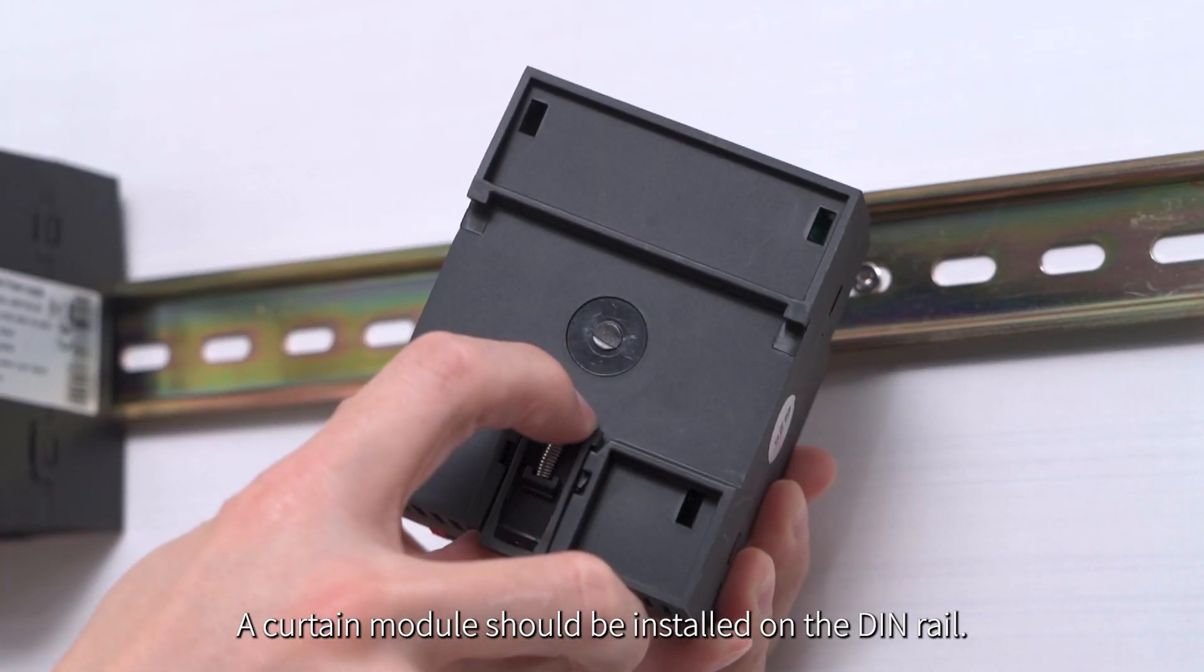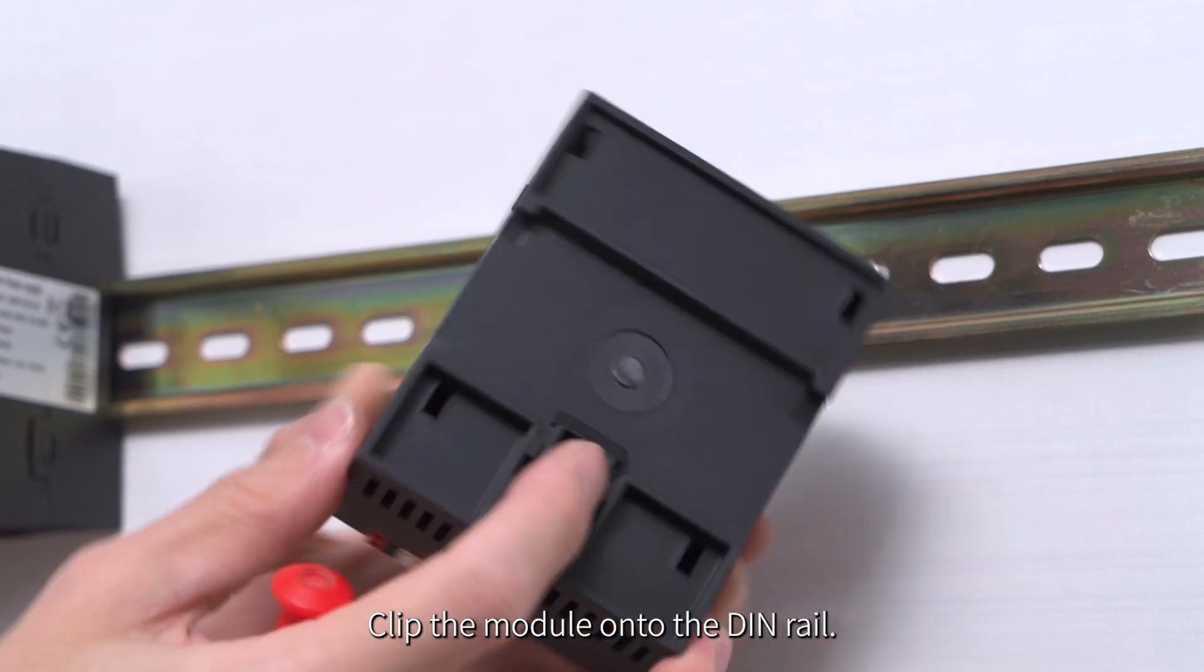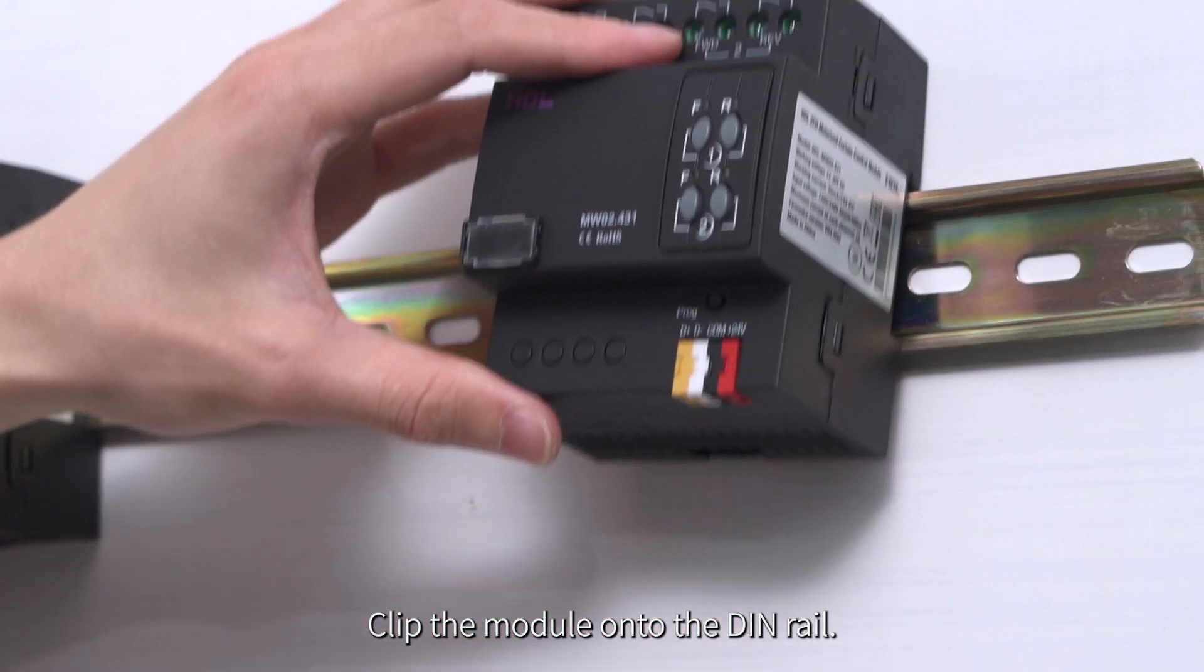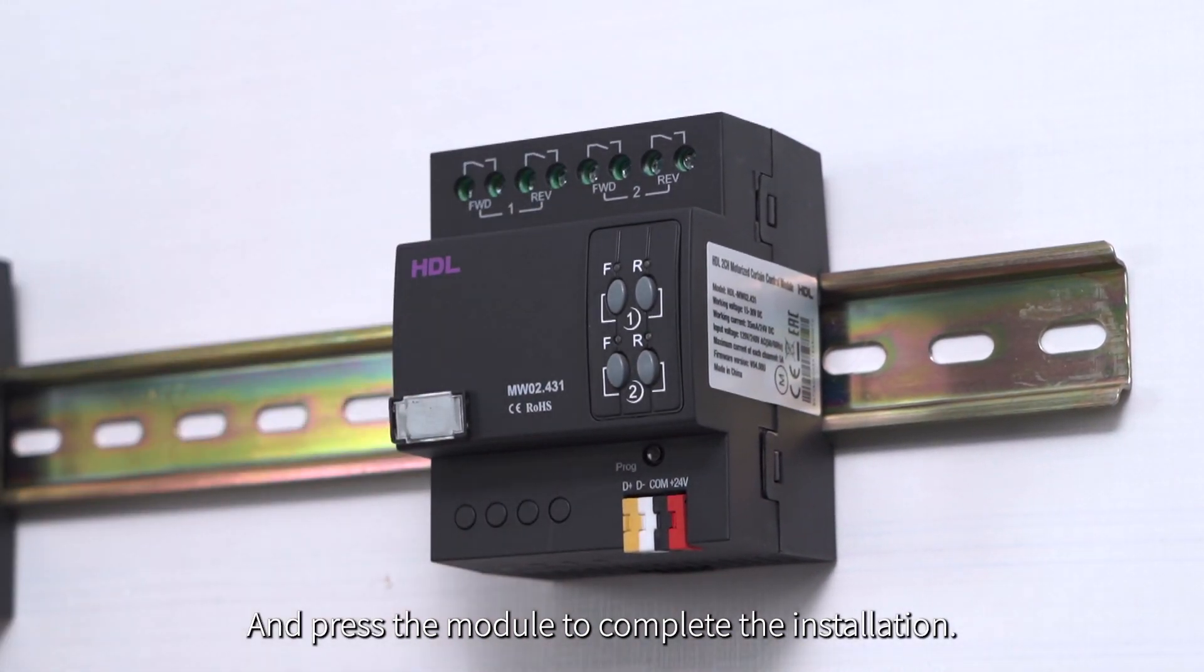A Curtain Control Module should be installed on the DIN rail. Clip the module onto the DIN rail and press the module to complete the installation.